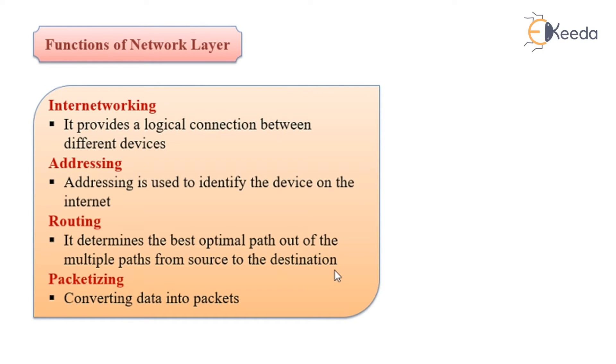Moving to the next segment which includes functions of network layer. Internetworking provides a logical connection between different devices. Addressing is used to identify the devices on the internet. Routing determines the best optimal path out of the multiple paths from source to destination. Packetizing converts the data into packets, which is the function of the network layer.